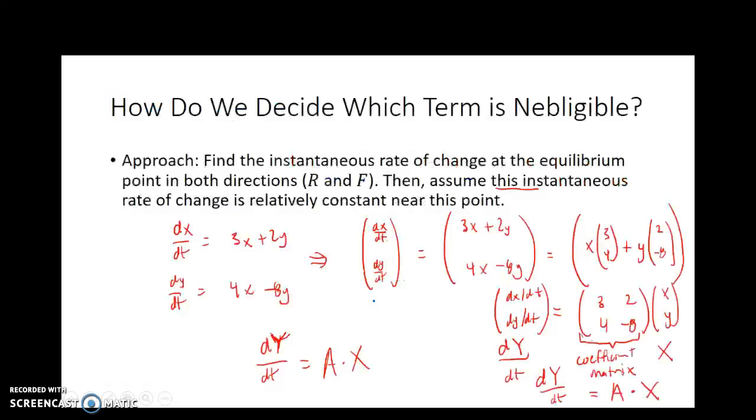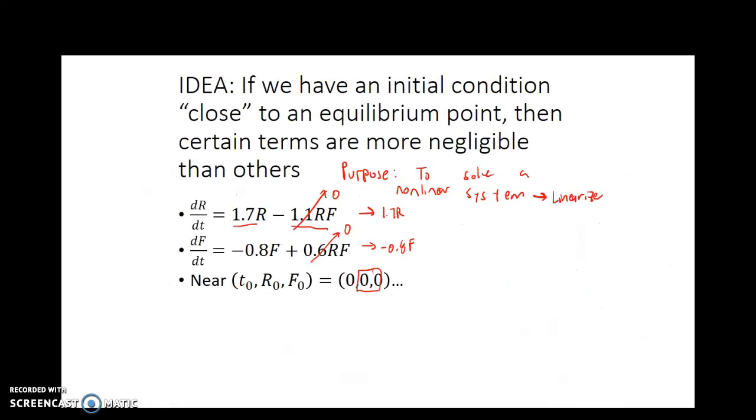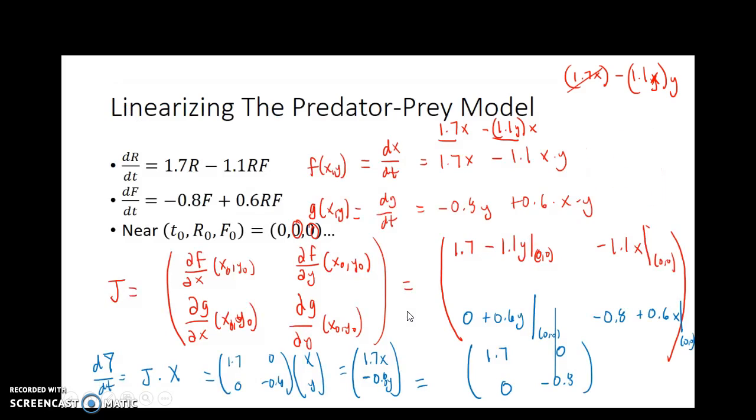Well, check this out. Back here, we said which terms are negligible around the initial condition 0, 0, and we determined that those were the terms that involved the product of R and F. And so we would have ended up with 1.7R and negative 0.8F. And down here, we have precisely ended up with that.